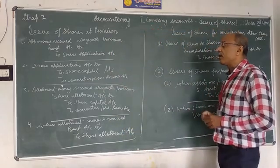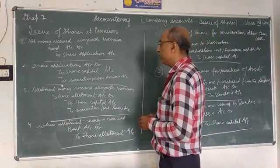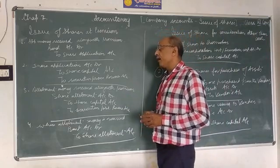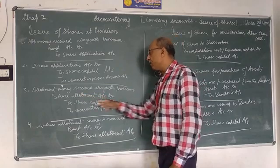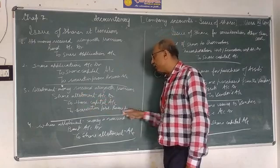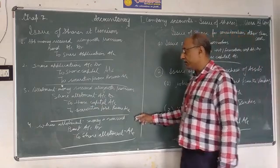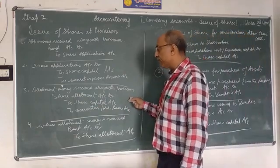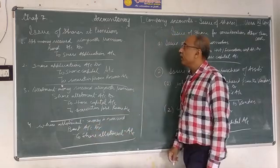When subsequent amounts are received for calls due, the entry is: Bank Account Dr. to Share Allotment Account.